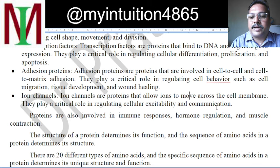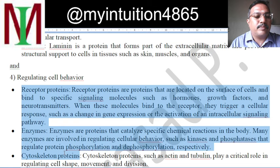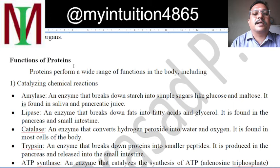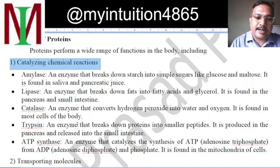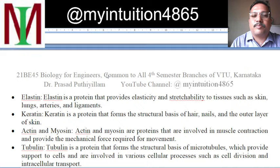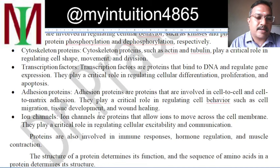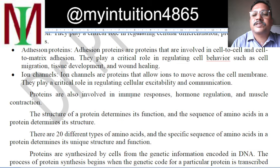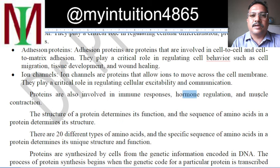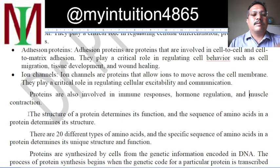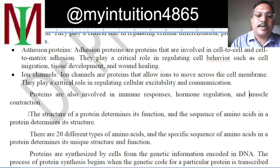These examples were given to make you realize the different functions of protein: catalyzing chemical reactions, transporting molecules, providing mechanical support to our body, regulating cell behavior, producing immune response, and regulating hormones. Hormones are generated based on our reactions — our emotions are because of hormones. Muscle contraction — when we move our hand or body — is also controlled by proteins.